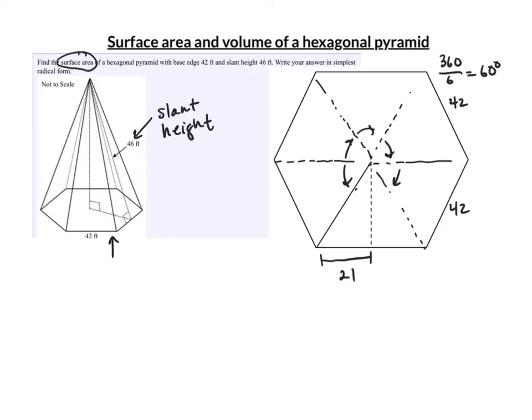Which means that each of these angles at the top is 30 degrees. Give us a 30, 60, 90.